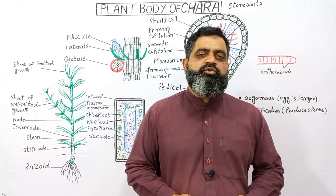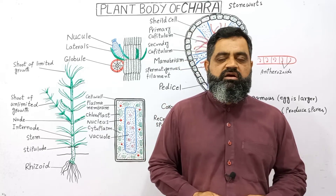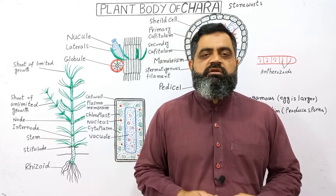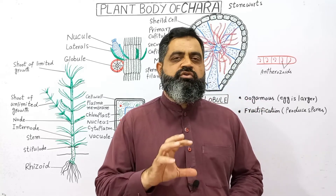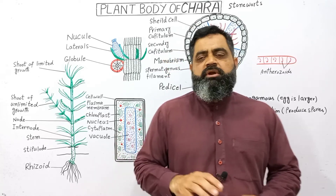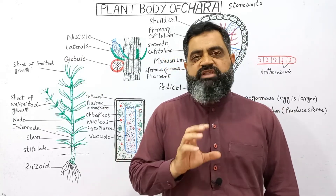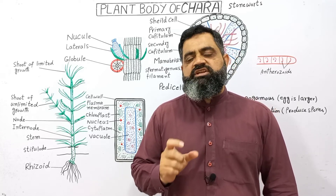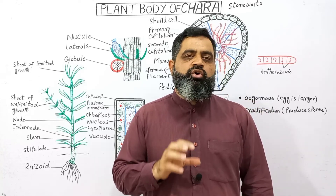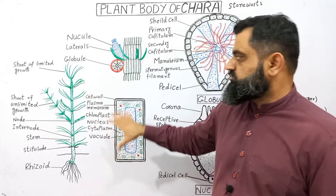Hello to all students. Today in this video we are going to discuss the vegetative structure of an alga known as Chara. Chara is a freshwater alga usually found in freshwater ponds, streams, and lakes. The plant body of Chara is thaloid — consisting of a thallus, which is a plant body not differentiated into root, stem, and leaves, and does not have vascular tissues. All algae and fungi have thaloid plant bodies.